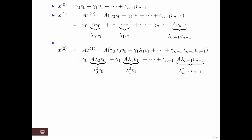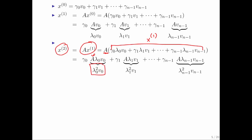This gives us the vector x at time 1. If we then create x at time 2 by multiplying that vector on the left by A again — giving it another push — we can bring A inside again. A times lambda 0 times v0 equals lambda 0 times lambda 0 times v0, which is lambda 0 squared times v0. The same pattern holds for all the other terms.